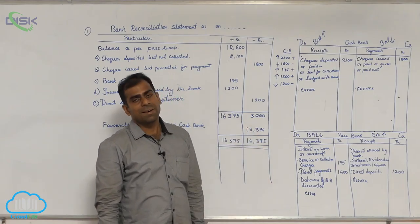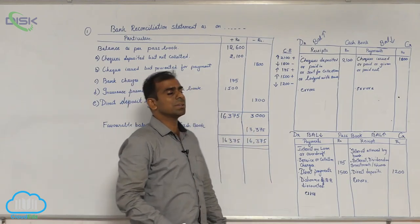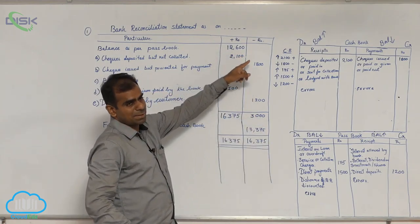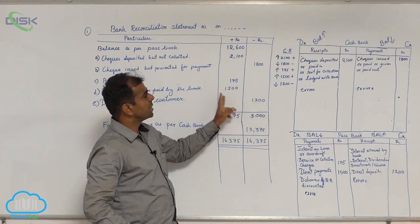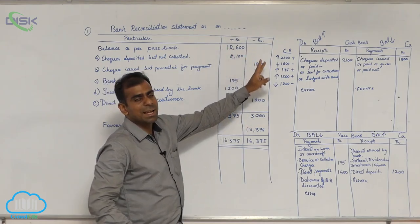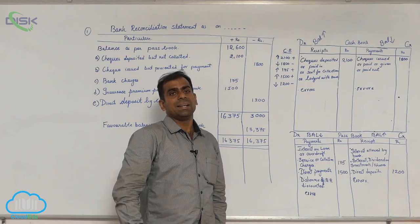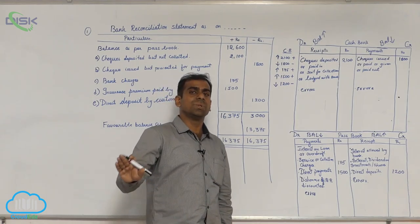Whereas the same according to the bank is only 12,600. Now why these differences? The differences are because of these transactions which are not recorded in one of the books.